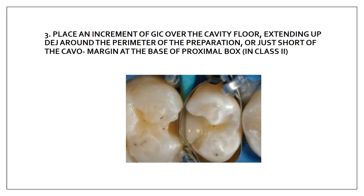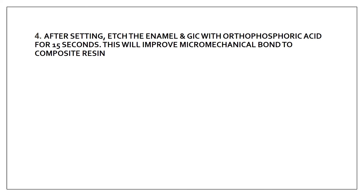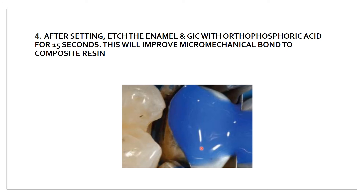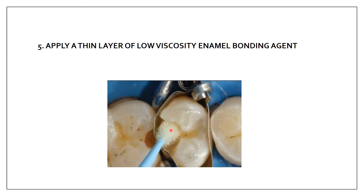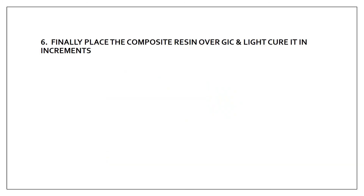After the GIC sets, you etch the enamel and the GIC with orthophosphoric acid for 15 seconds. This improves the micromechanical bond to the composite resin. After etching the enamel, you remove the etchant and then place a very thin layer of enamel bonding agent over the etched surface.